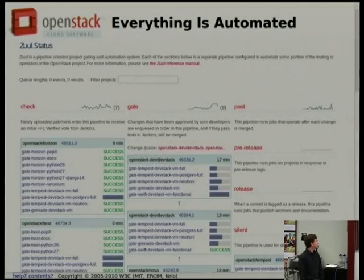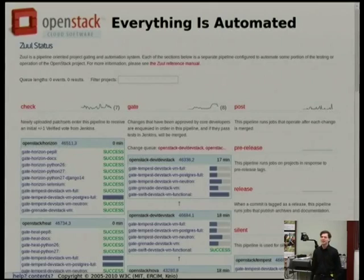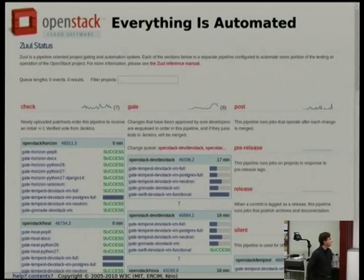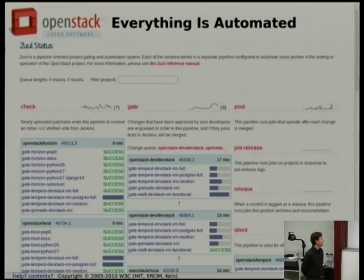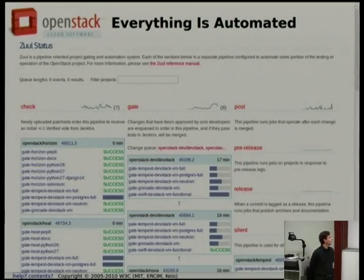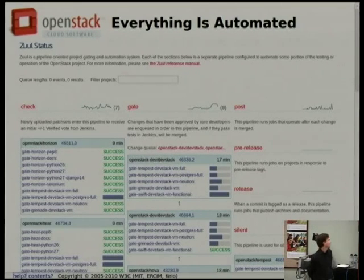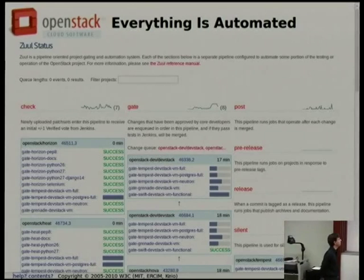Everything is automated — we hate doing work by hand, we have computers to do it for us. All of this testing is automated, and our release process is automated as well. This is a teaser for the main status screen for Zuul — you can already get an idea that not only are we running a lot of tests, but we have facilities to manage documentation builds, release artifacts, and things like that. The numbers are even larger at this moment.